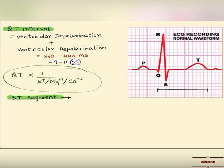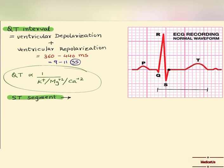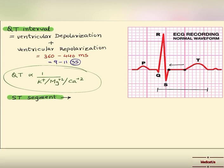Now about the ST segment — it runs from the end of S to the start of T. The junction point between the QRS complex and the ST segment is also called the J point.